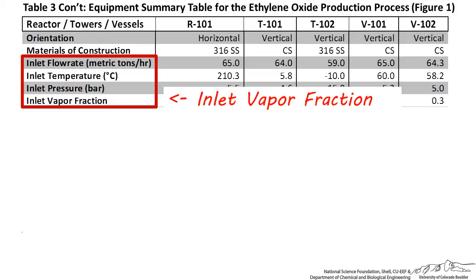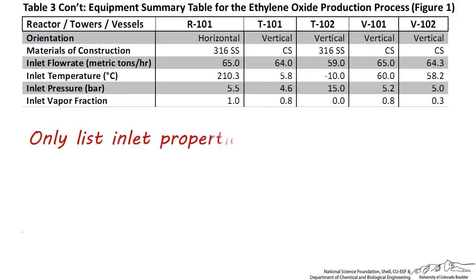Notice the properties of the outlet stream, or streams, are not listed. This is because flashes and towers have two or more streams exiting the vessel, and listing the physical properties of all of these streams would be cumbersome and would result in an overly cluttered table.